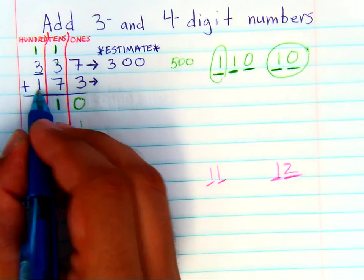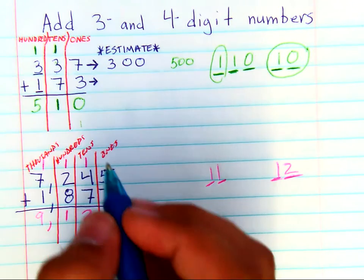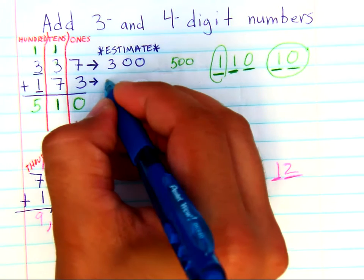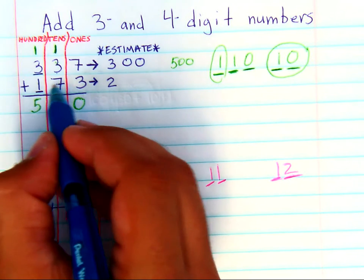And 173 will round to the hundreds as well, because it's the largest place value. Find your place. Look next door. Five or greater. Add one more. Numbers in front stay the same. Numbers behind zero is their name.